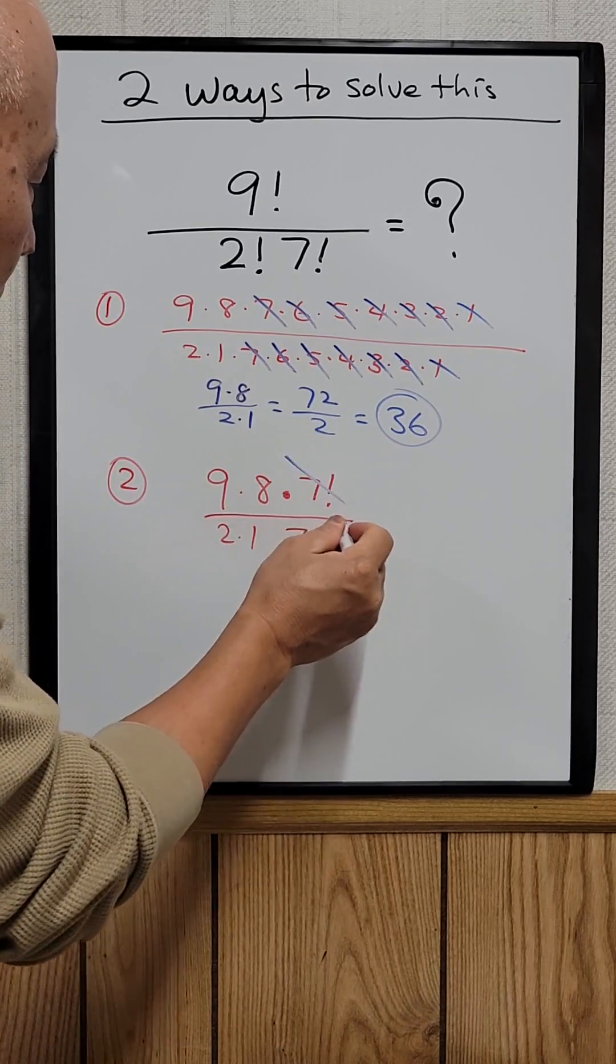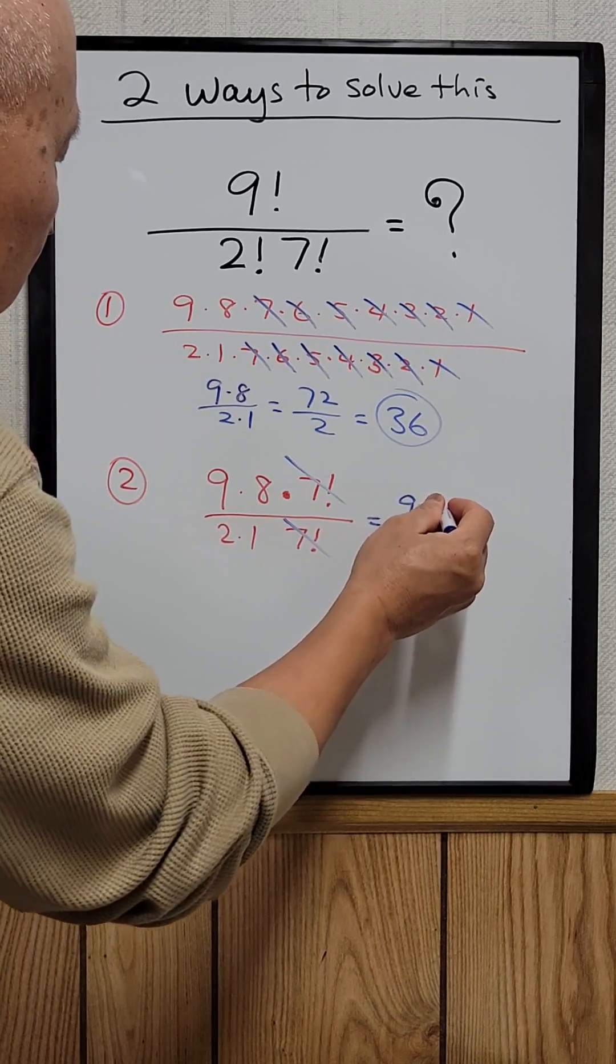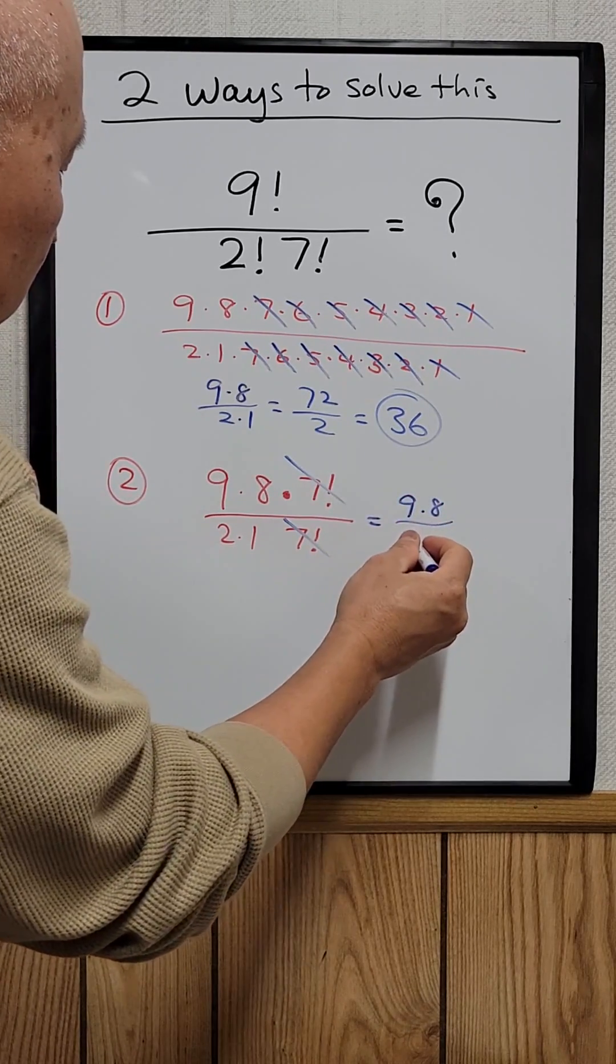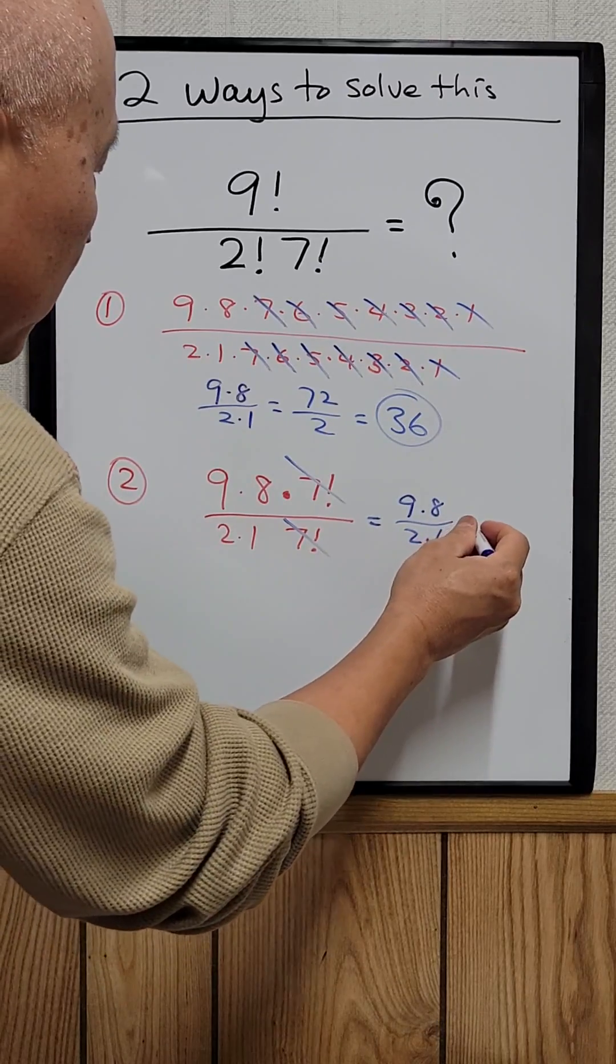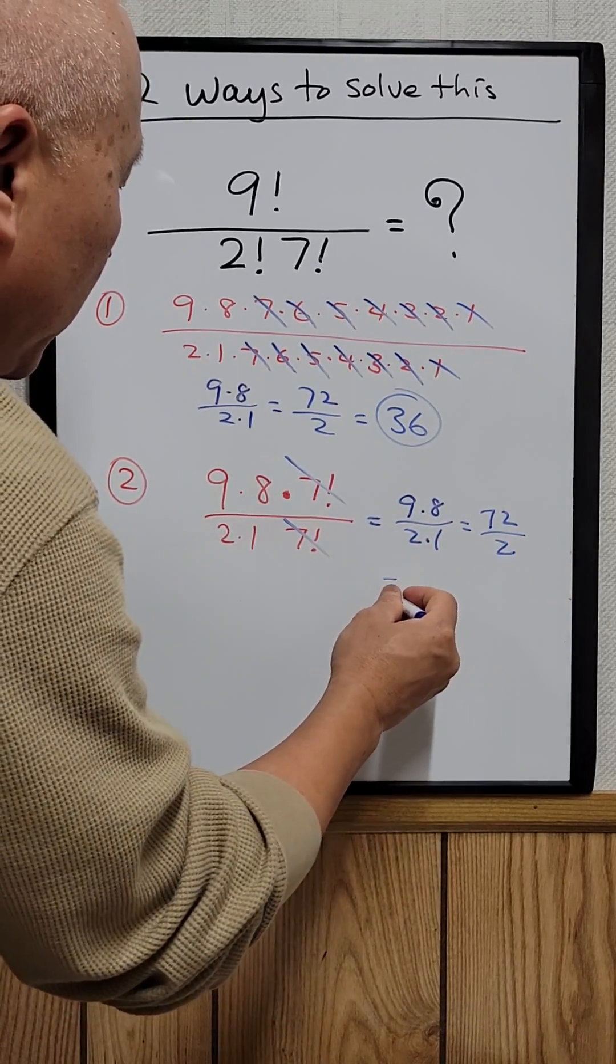So this is the easiest way to do it. After canceling, you have nine times eight over two times one, which equals seventy-two divided by two, which is thirty-six.